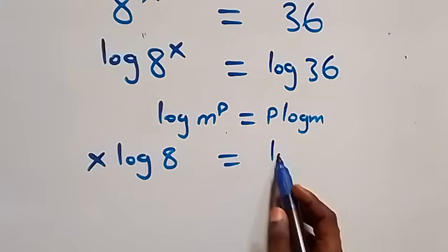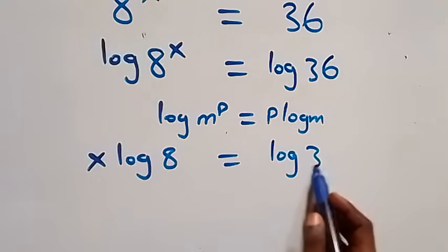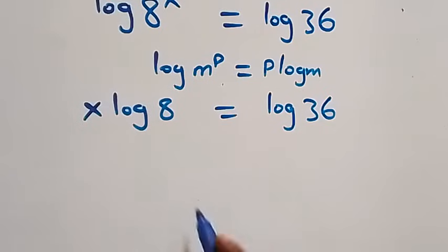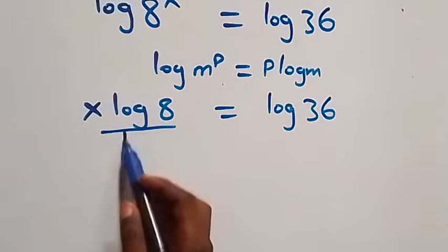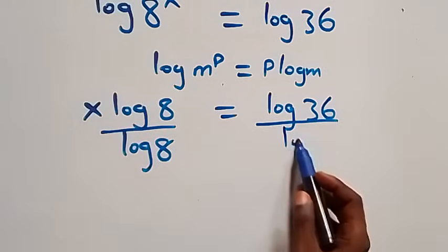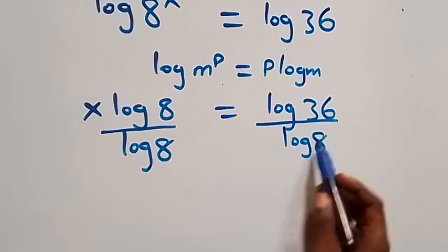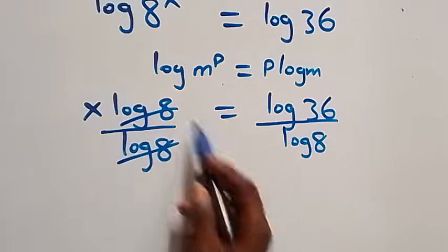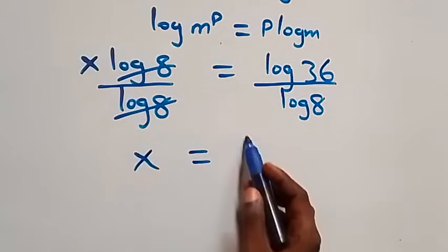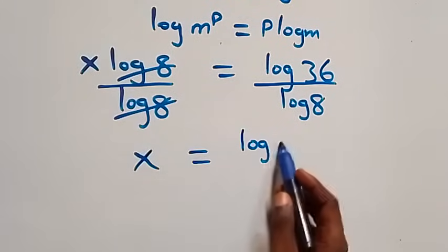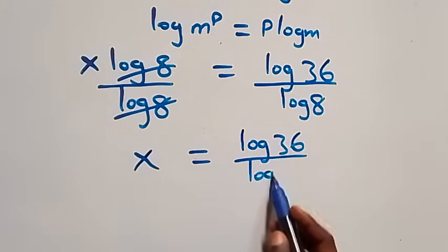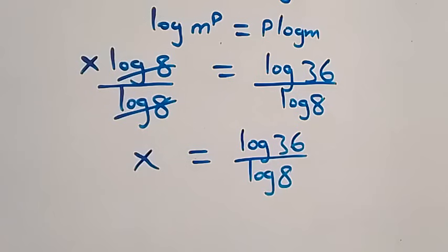Then equals log 36. The next step is to divide both sides by log 8. Log 8 cancels on the left, and we have x equals log 36 over log 8.